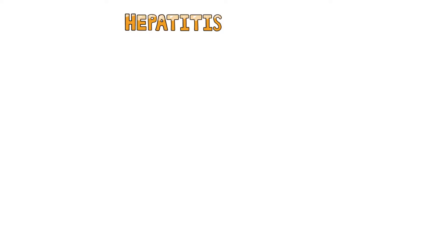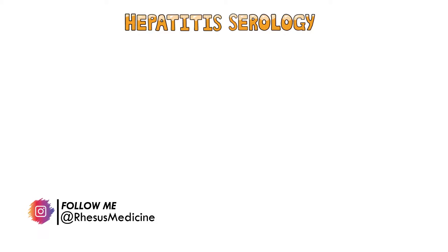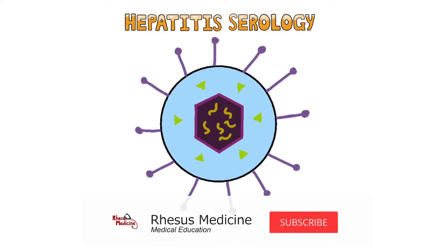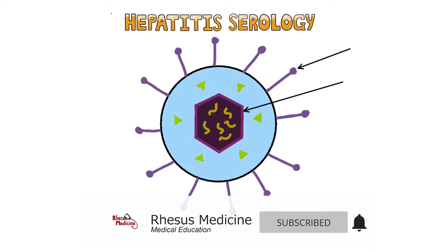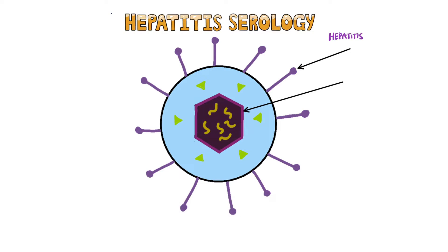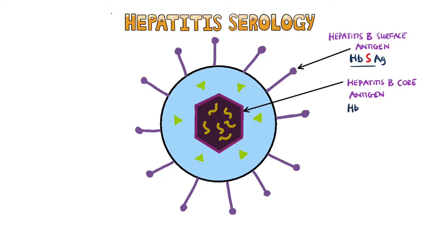Serology plays a big role in diagnosing hepatitis B, but the interpretation of the results can be quite tricky. This is the hepatitis B virus. You can see the outer surface, which is known as the hepatitis B surface antigen. Then inside we have the core, giving the hepatitis B core antigen.